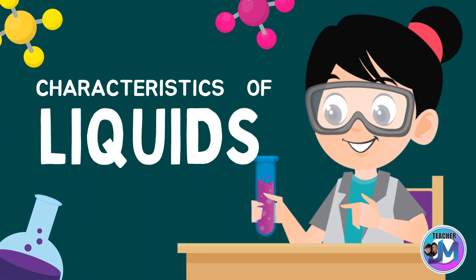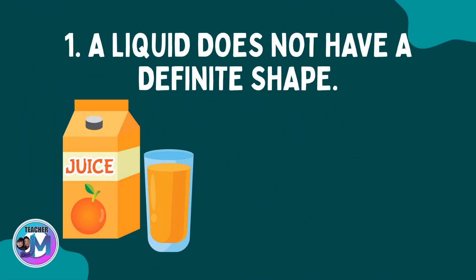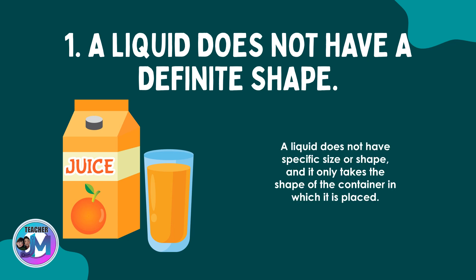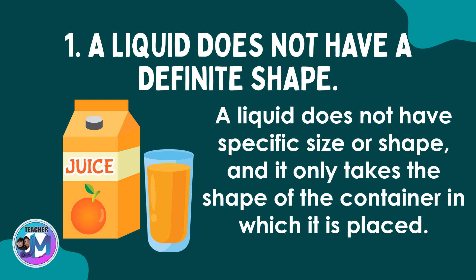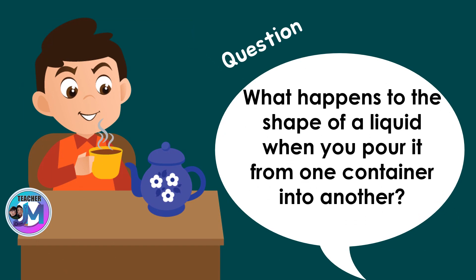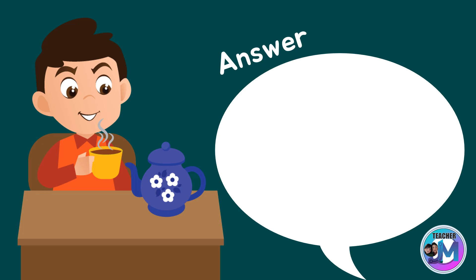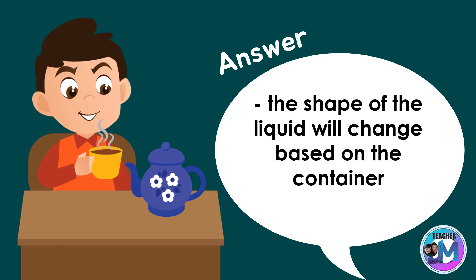Now, let's move on to the characteristics of liquids. Number one: a liquid does not have a definite shape. A liquid does not have a specific size or shape, and it only takes the shape of the container in which it is placed. For example, if coffee was placed in a kettle, it takes the shape of the kettle. Once it is poured in a cup, it takes the shape of the cup.